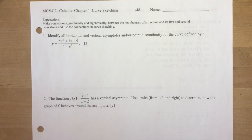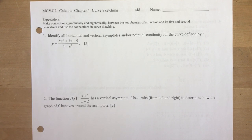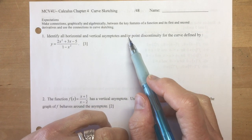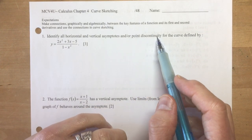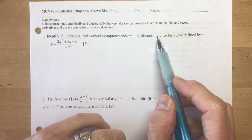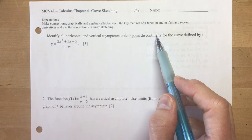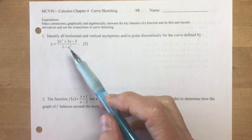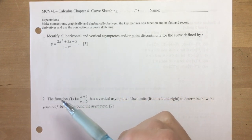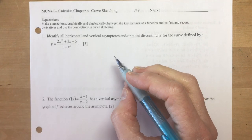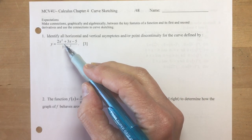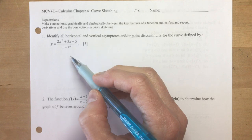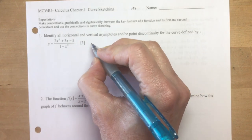Question 1: identify all horizontal and vertical asymptotes and/or point discontinuity for the given curve. There could be a point discontinuity — remember, if there is one, something in the denominator will divide out into the numerator. So the first thing you want to do is factor both the numerator and the denominator before you begin.